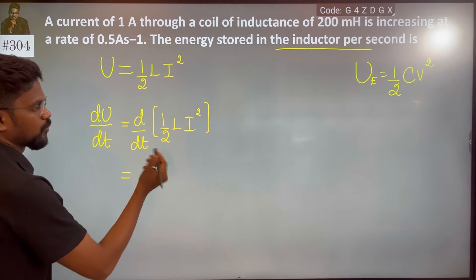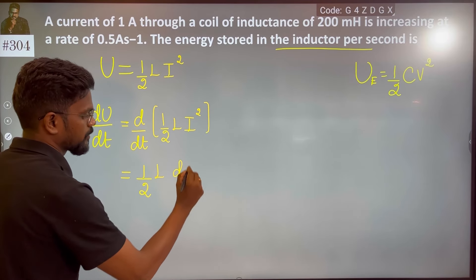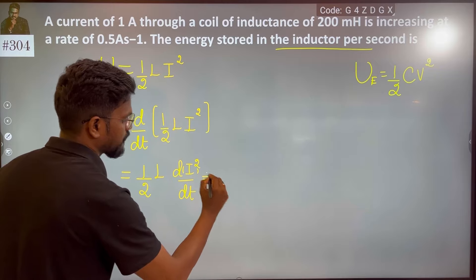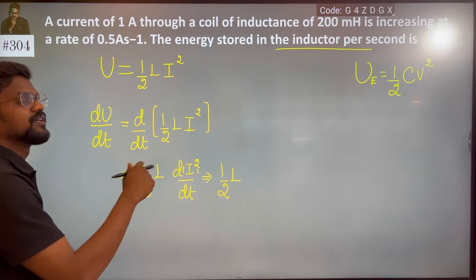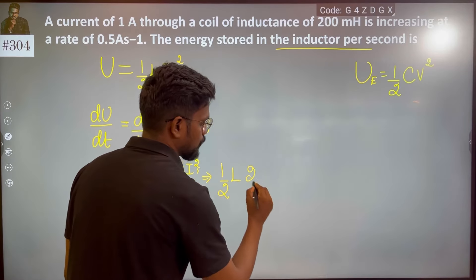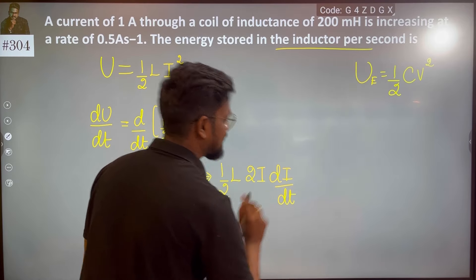So, if I do that, 1 by 2 take it as common, L take it as common, so I will do differentiation of I squared. So, 2I times 1, I will remain, so di by dt.